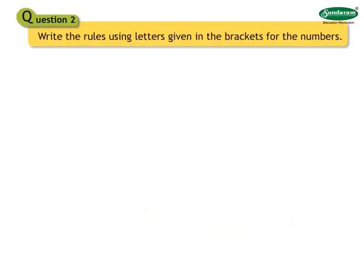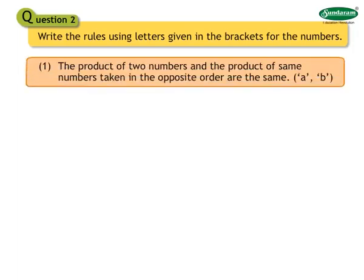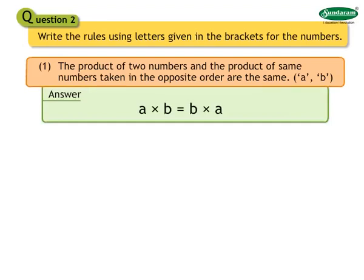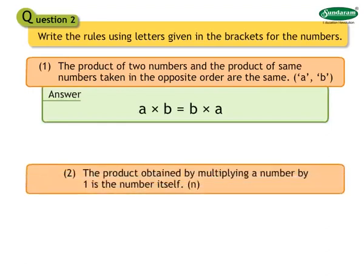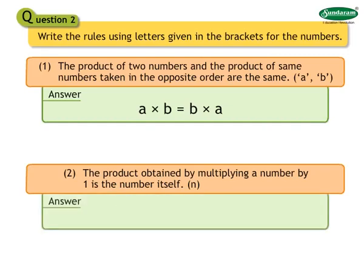Question number 2: Write the rules using letters given in the brackets for the numbers. Number 1: The product of two numbers and the product of same numbers taken in the opposite order are the same. The numbers are A and B. Answer: A into B equals to B into A. Number 2: The product obtained by multiplying a number by 1 is the number itself. The number is N. Answer: N into 1 equals to N.